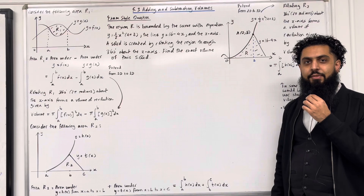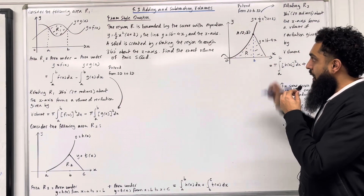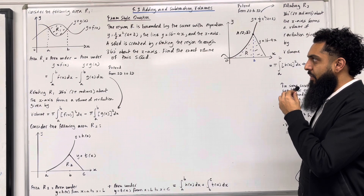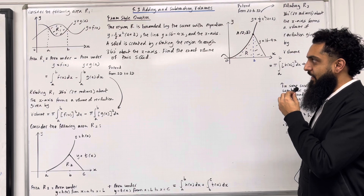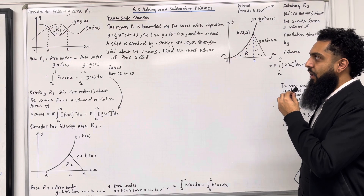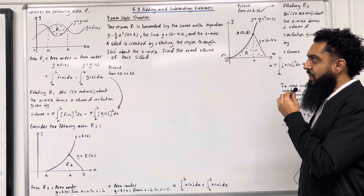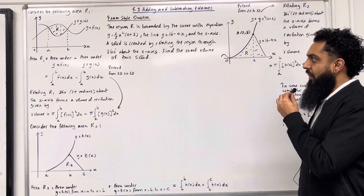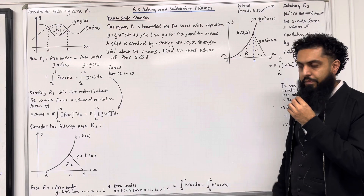Here is the second exam style question. The region R is bounded by the curve y = ½x²(x + 2), the line y = 16 − 4x, and the x-axis. A solid is created by rotating the region through 360 degrees about the x-axis. Find the exact volume of the solid.